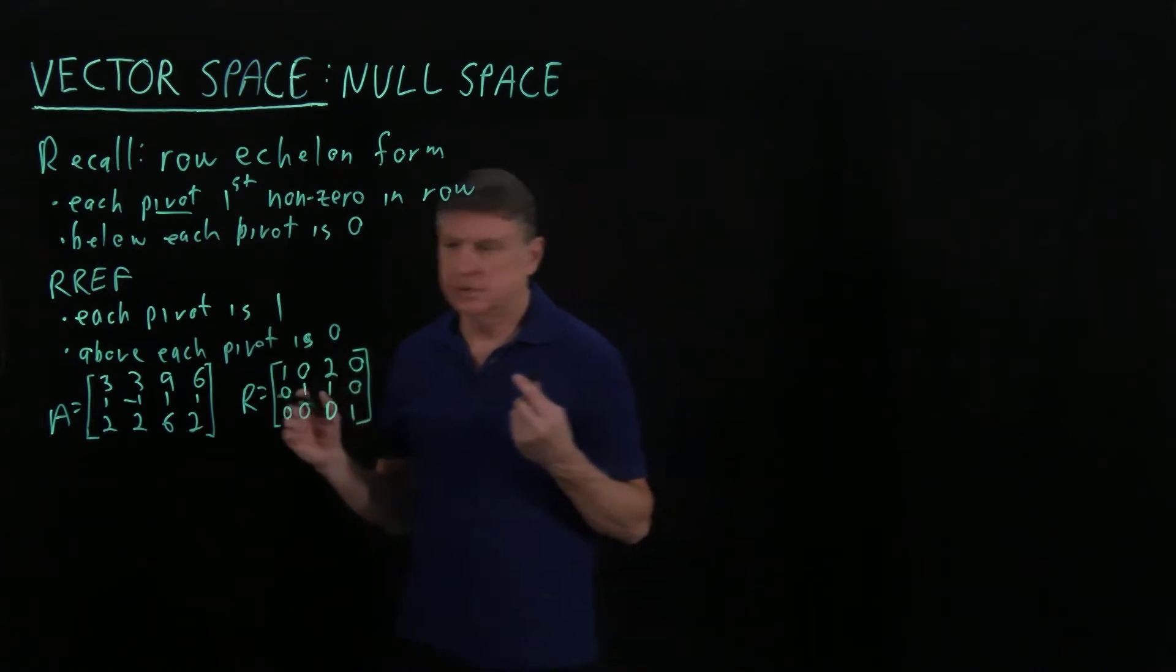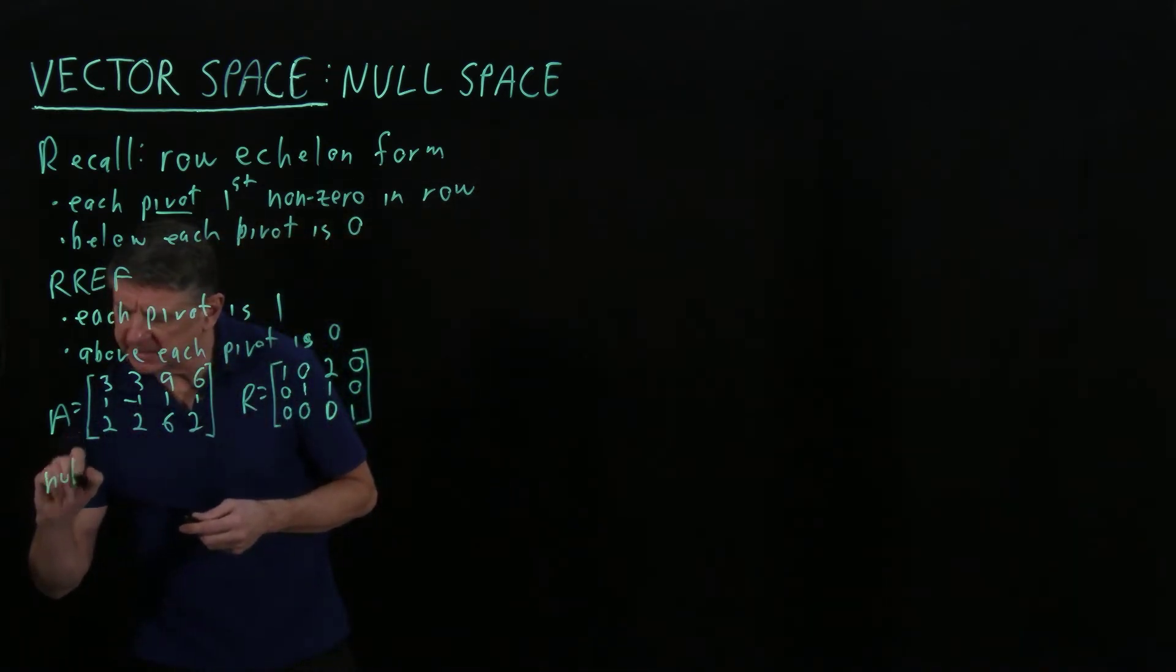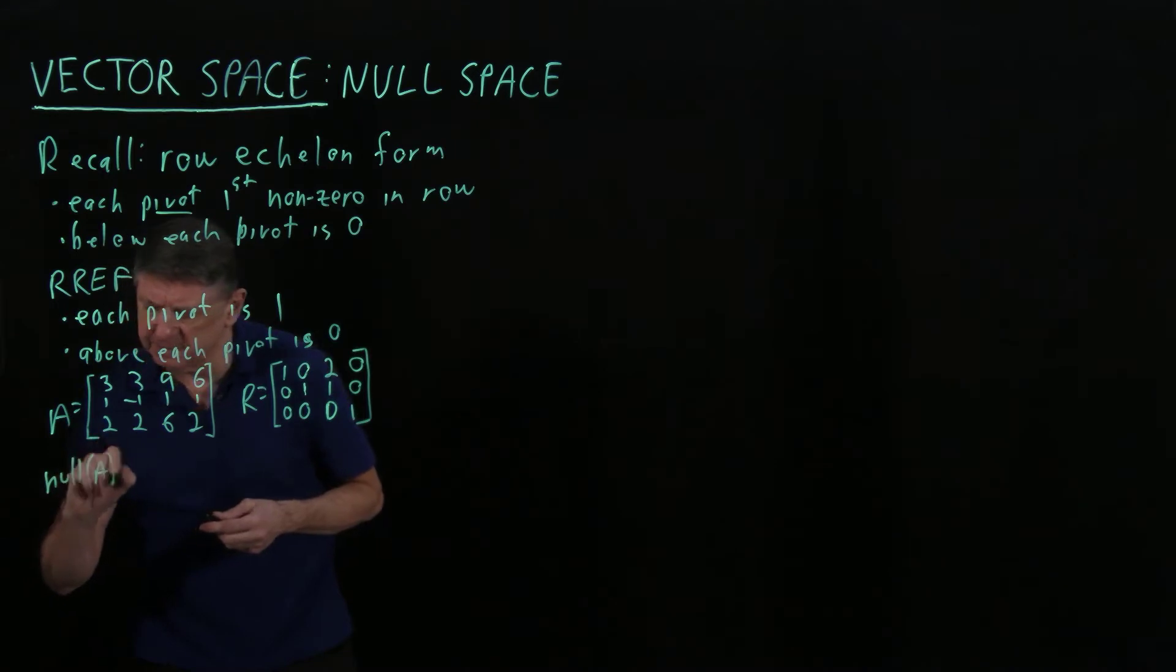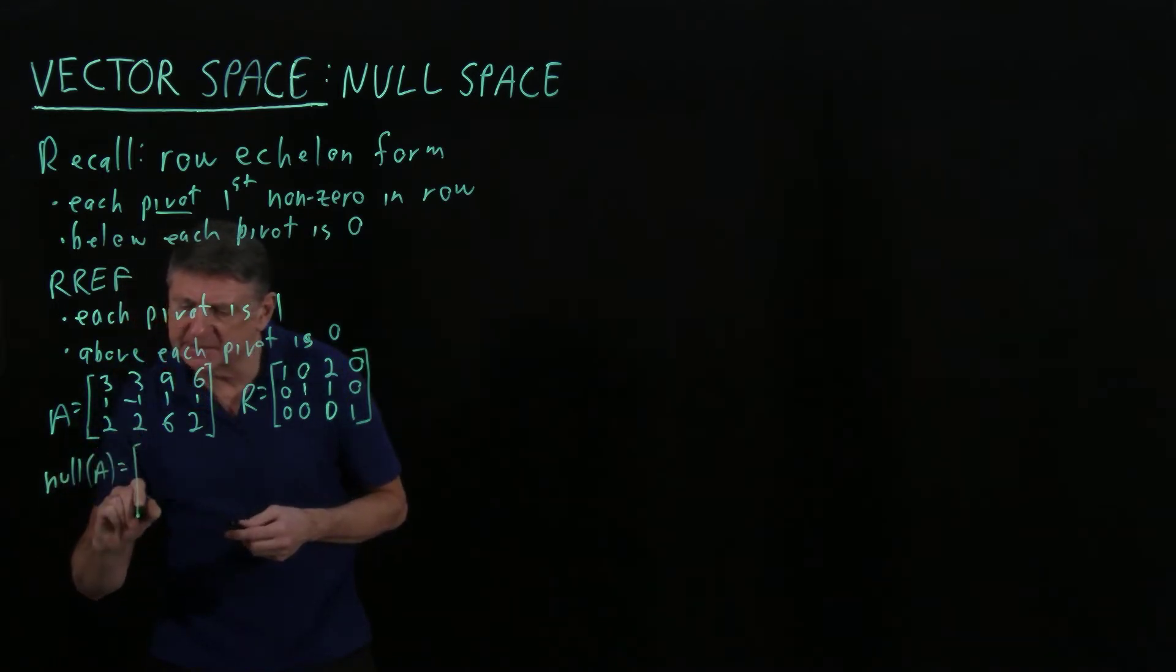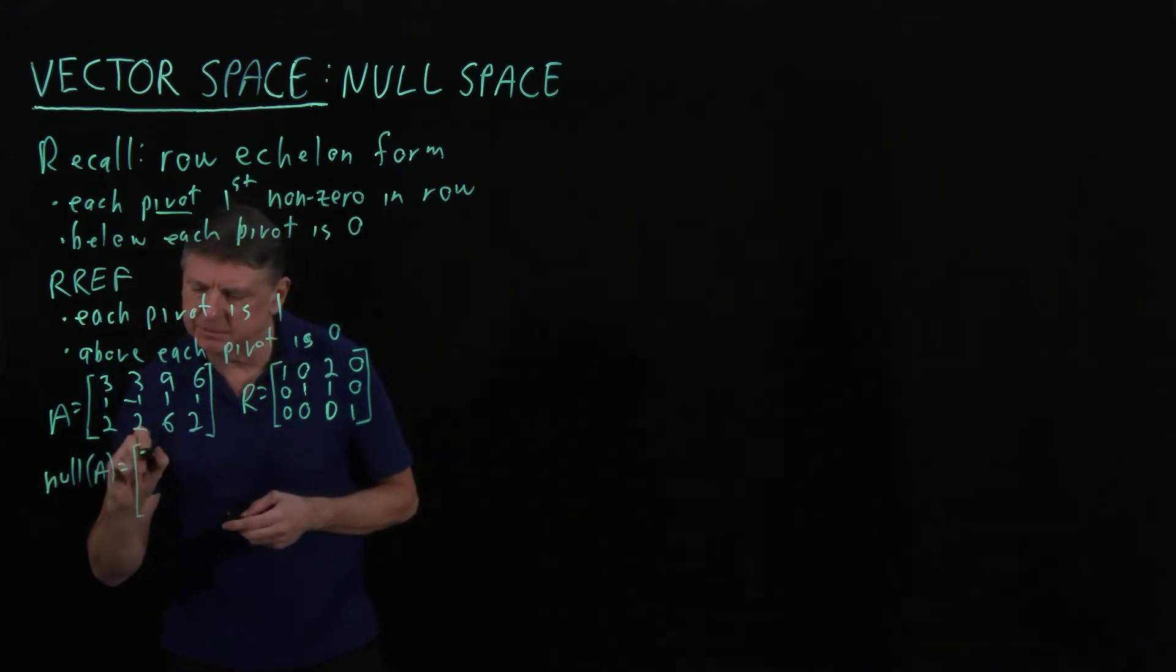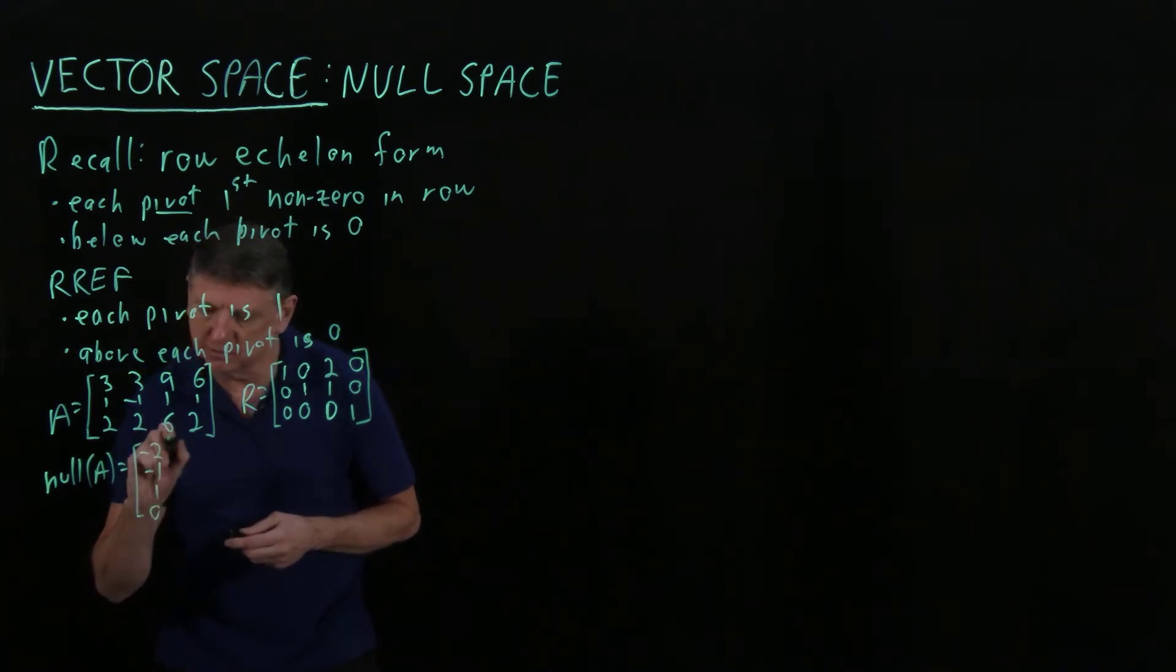When I work out the null space, what I find is that the null space of this matrix is this vector: (-2, -1, 1, 0).